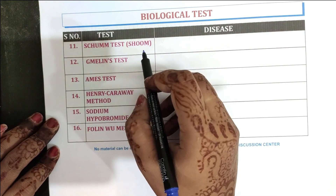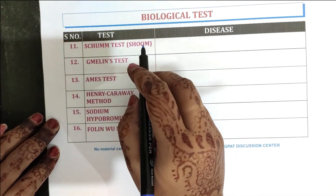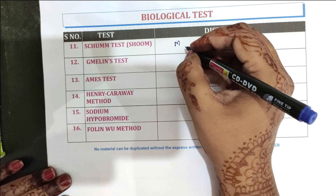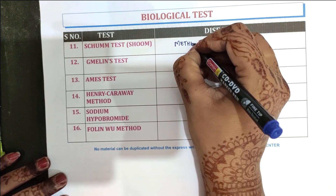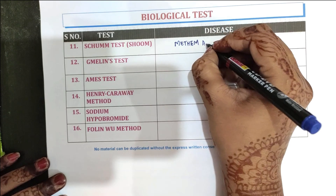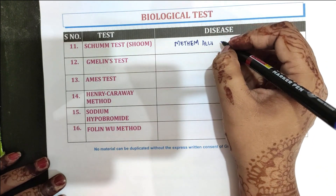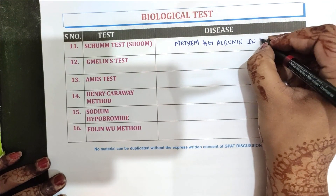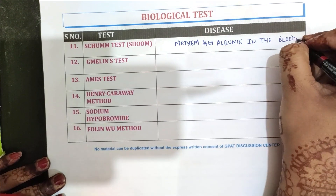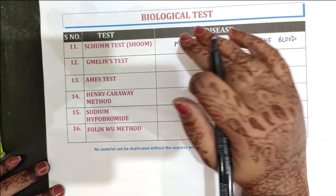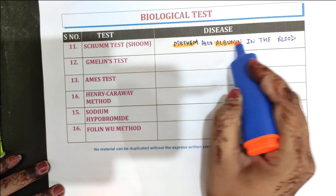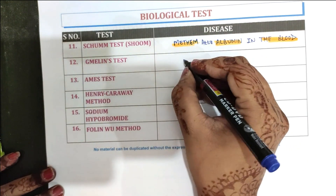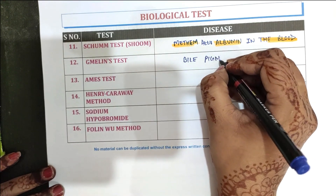The next test is the Schoem test. The Schoem test is done for the estimation of methemalbuminemia, that is methemalbuminemia in the blood. The next one is the Melins test, which is done for the detection and estimation of bile pigment.